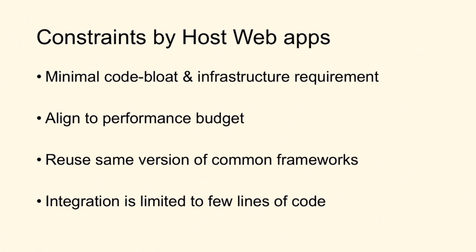When you're developing a fragment and there is a host web app, there are constraints the host web app places on the fragment team. One is it should not add a lot of code bloat — you should not have 10 to 12 different files coming in. It should align to the performance budget. It should reuse common versions of the same framework — if the host web app is on React 15 and you're on React 16, you'll download additional versions of React unnecessarily. Integration should be limited to a few lines of code, so the host web app is only dealing with some interfaces.